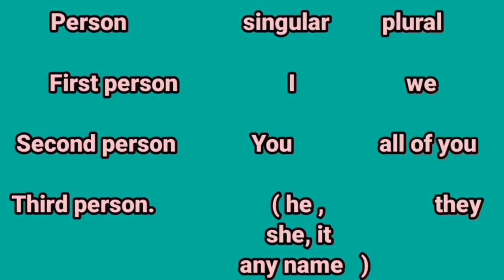First person is the person speaking: I, we, me, my, us, our, etc. Second person is the person spoken to: you, your, all of you. Third person is the person spoken about. Examples: he, she, it, they, and any name.